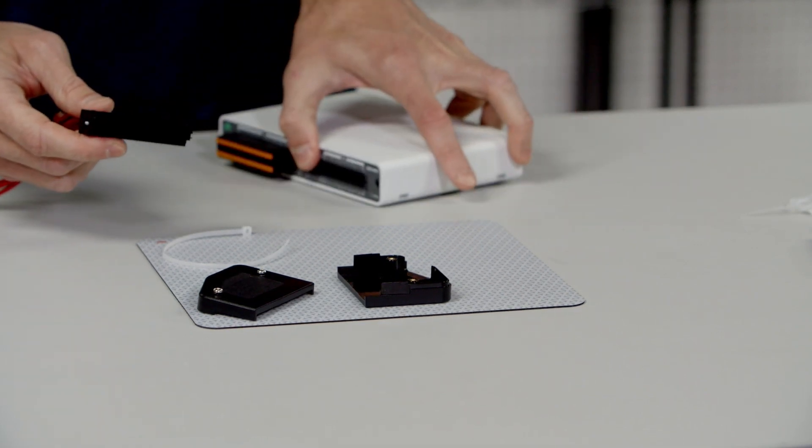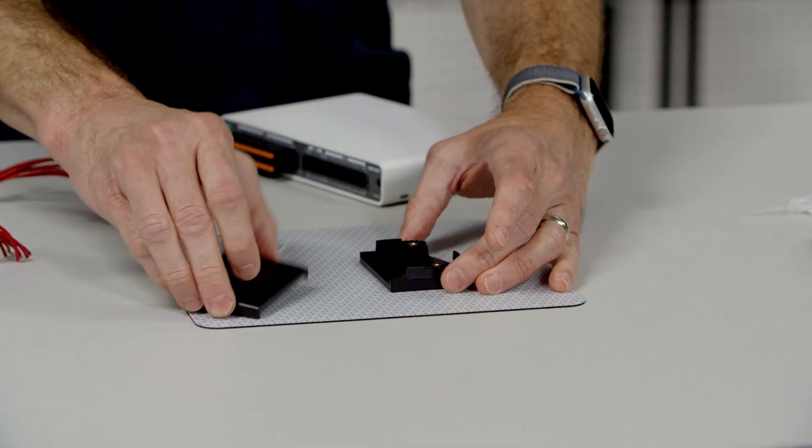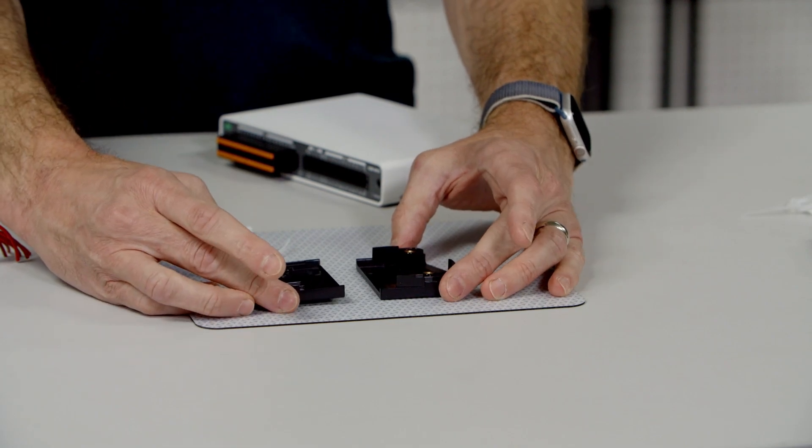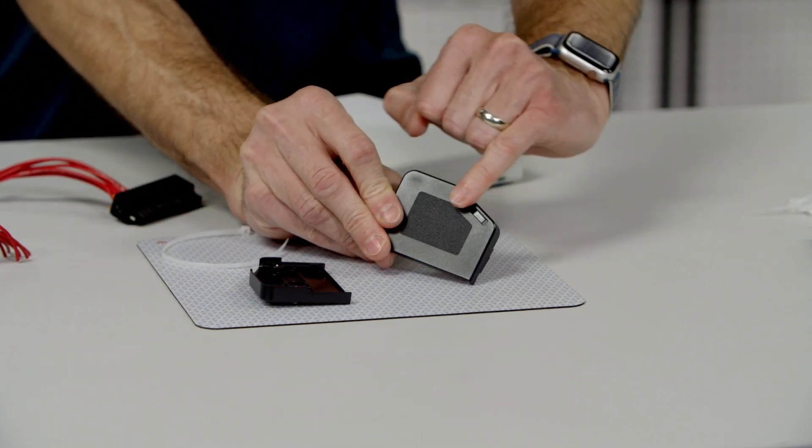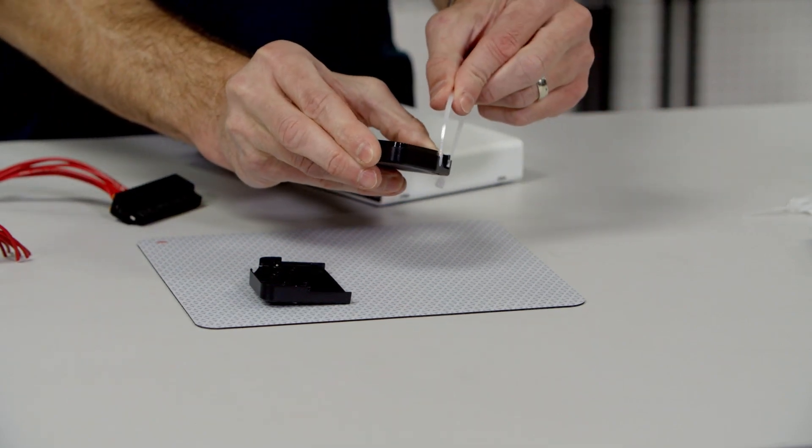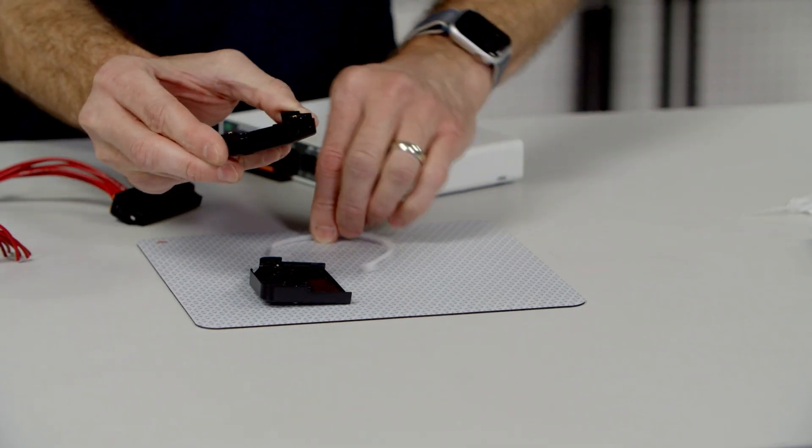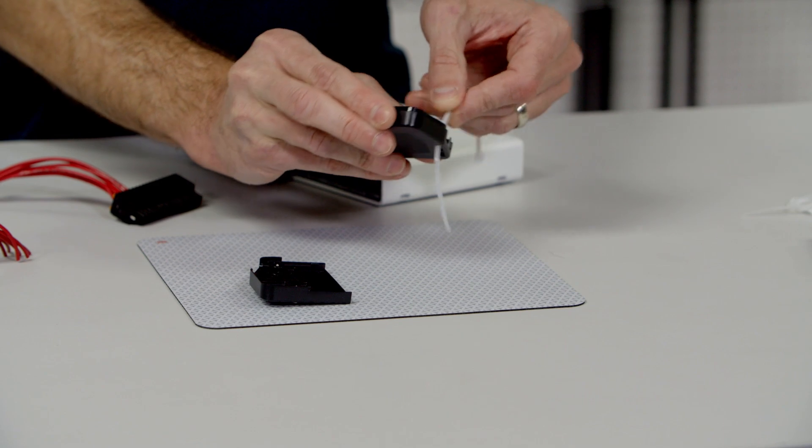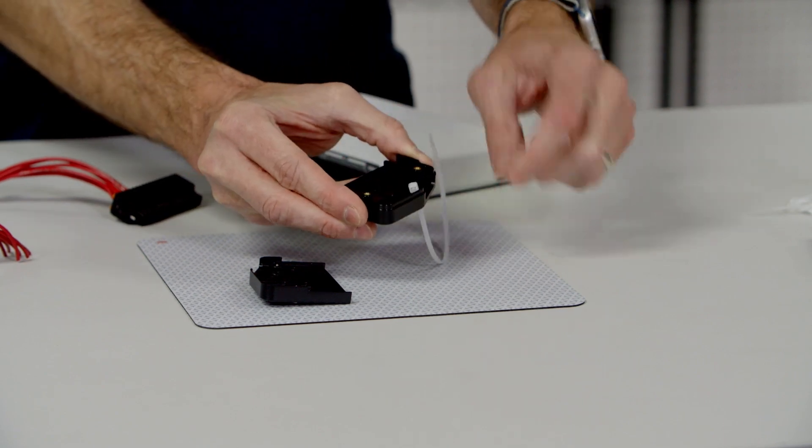And to connect this to the back shell, first we're going to identify which piece holds the zip tie. And so you can see this one has the zip tie route in it. So I'm going to lace my zip tie with the bumpy part of the zip tie on the inside.